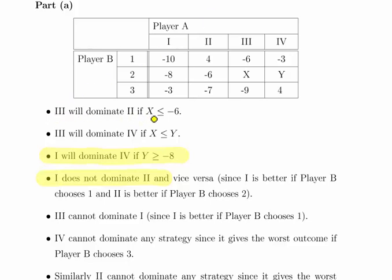3 will dominate 2 if X is less than minus 6. So if X is less than minus 6, that means that each possible outcome of 3 is better than 2. And 3 will dominate 4 if X is less than Y. So you could just have a sort of quick comparison. So essentially that's the type of thing you're expected to do here.